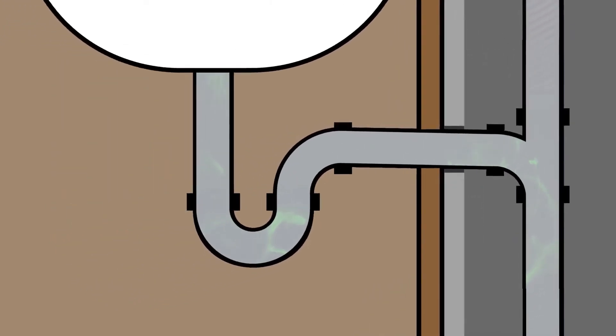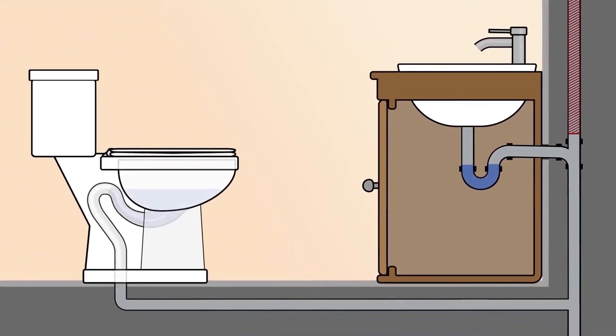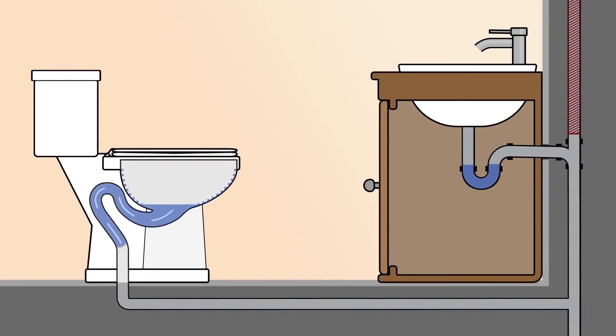Without access to outside air, the vacuum in the system might pull air from another plumbing fixture. For example, flushing the toilet could pull air from the sink, removing the water from the trap.